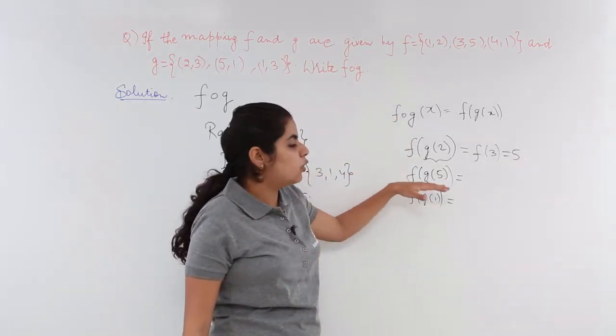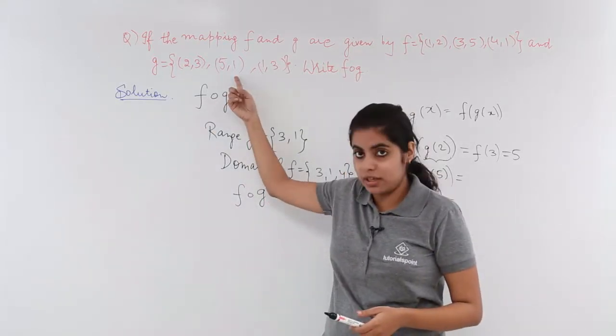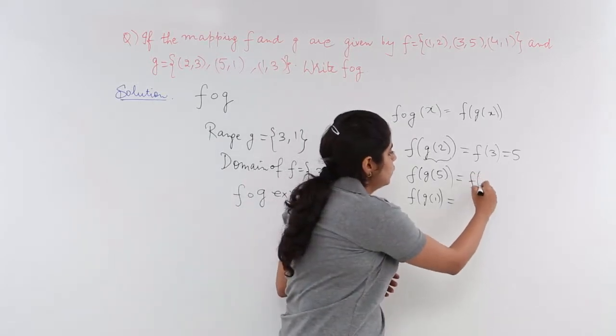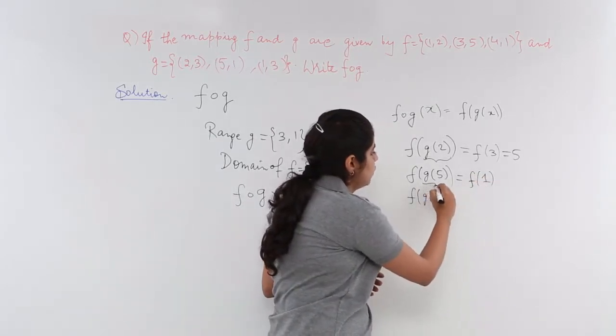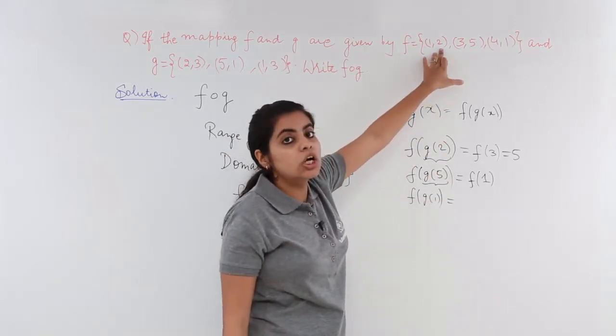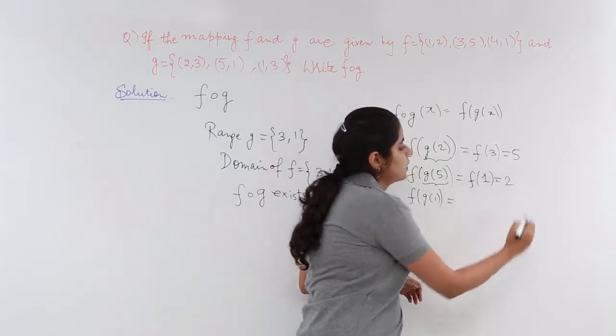Now what is G of 5? G of 5 is 1. After checking G of 5 is 1 you need to put this value inside. G of 5 is 1. What is F of 1? F of 1 is 2. The value of 1 at F is 2.